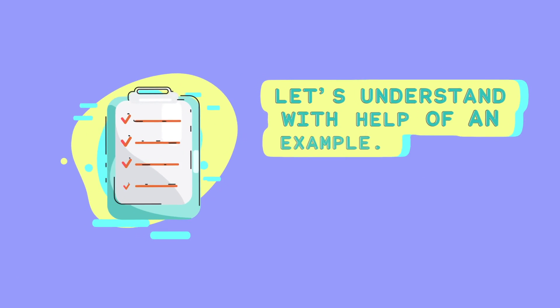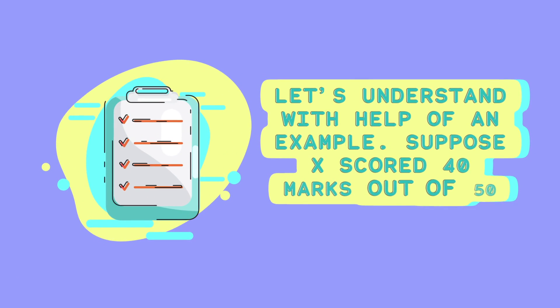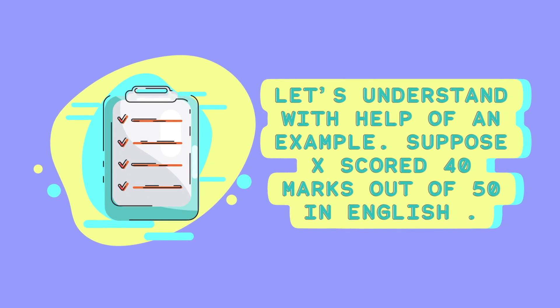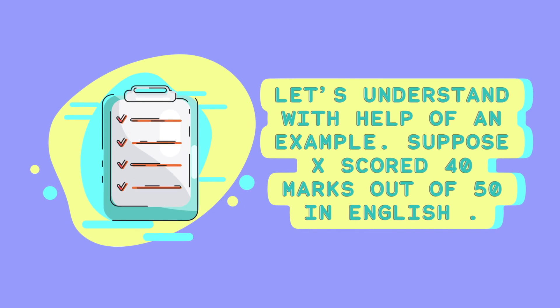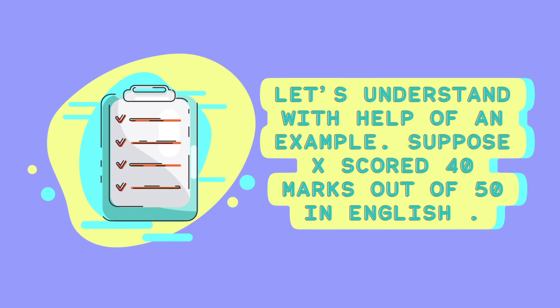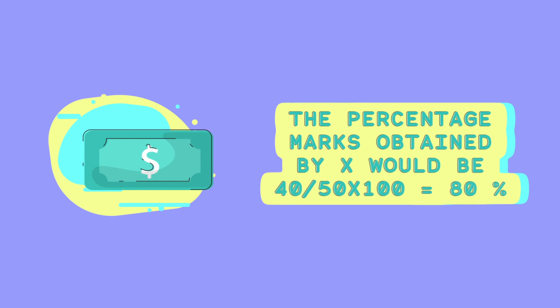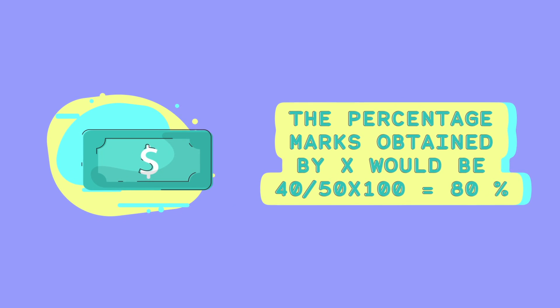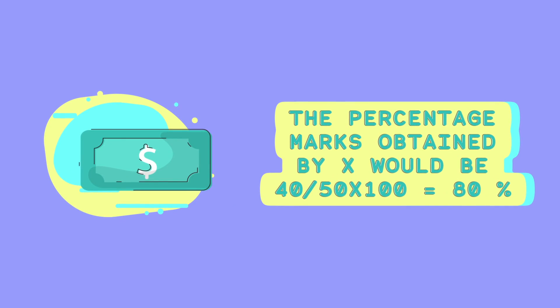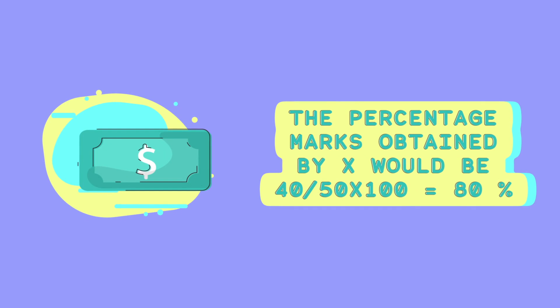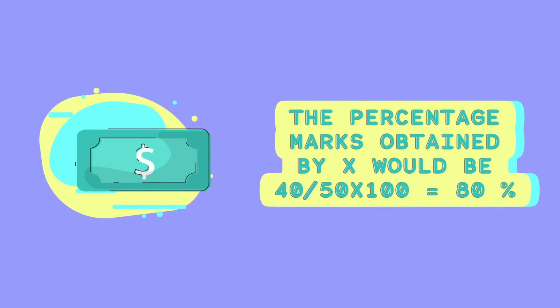Let's understand with the help of an example. Suppose X scored 40 marks out of 50 in English. The percentage marks obtained by X would be 40 divided by 50, multiplied by 100, that is equal to 80%.